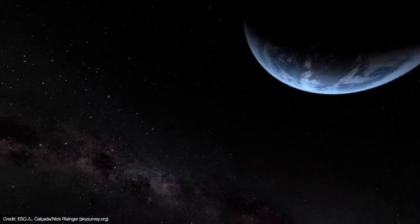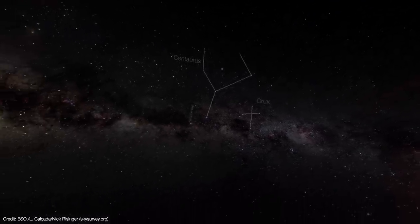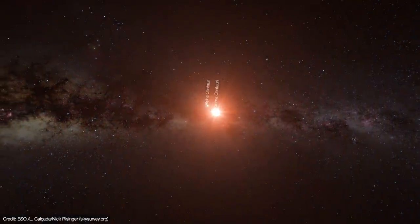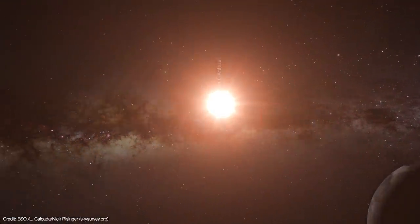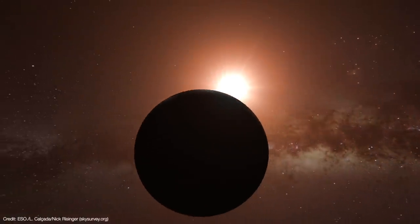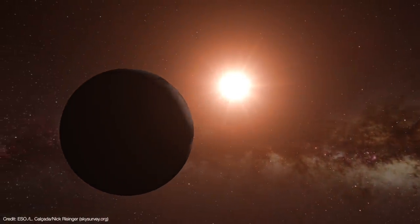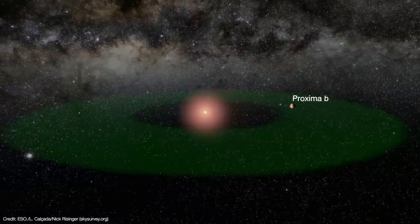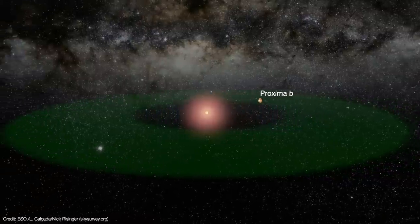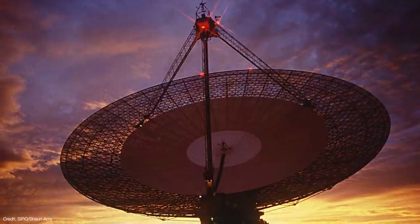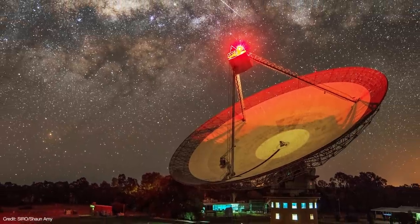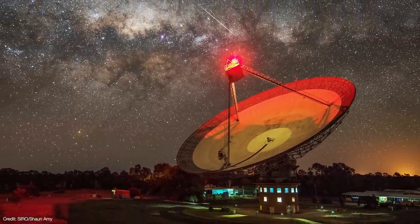Now if any of this seems familiar, it's because it is. In late 2020, there was a lot of buzz about a possible signal detected around the star Proxima Centauri. Proxima is another red dwarf star, and it happens to be the closest star to our Sun. It hosts two known exoplanets, one of which orbits Proxima in its habitable zone. In 2020, astronomers found an interesting signal detected by the Parkes radio telescope in Australia while it was looking at Proxima.